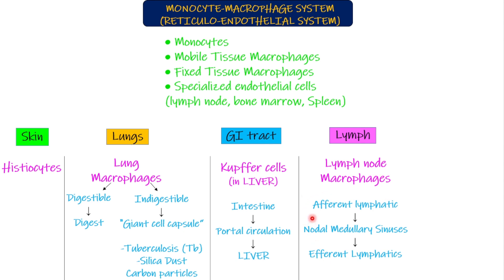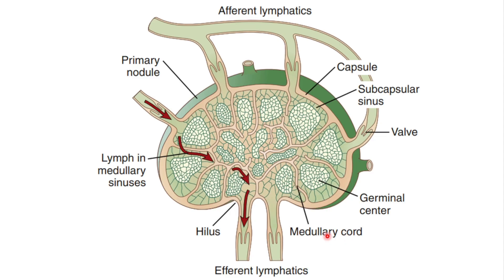The structure of the lymph node has afferent lymphatics entering into the lymph node and efferent lymphatics exiting from it. Inside the lymph nodes there are nodal medullary sinuses where the macrophages are present and where they eat the foreign body. The afferent lymphatics bring the foreign body into the lymph node, and in the medullary sinuses the lymph flows past the macrophages, which eat anything passing through. Finally the lymph is cleared of the foreign body as it exits via the efferent lymphatics.